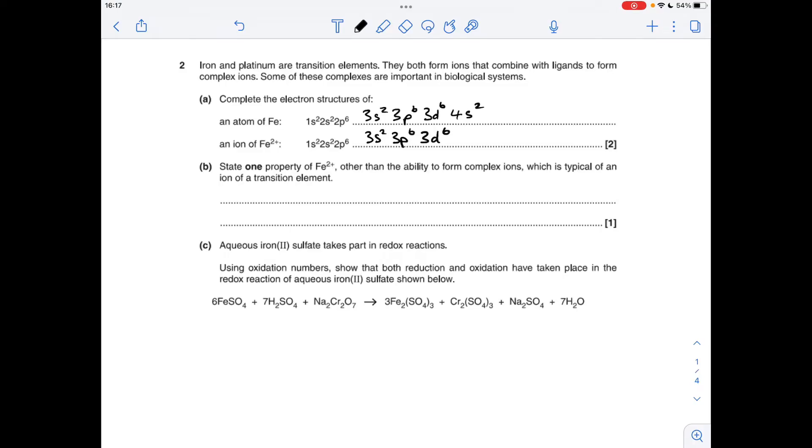Moving on to part B. One property of Fe2+, other than the ability to form complex ions, which is typical of an ion of a transition element. We can't go for variable oxidation state here because it specifies Fe2+. So we're going to use oxidation numbers to show both reduction and oxidation have taken place in the redox reaction. Now there's a big clue in the question there, not that we really need it.